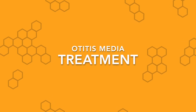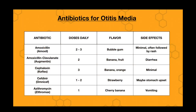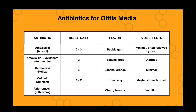In treating otitis media, we use oral antibiotics. The most commonly used is amoxicillin — given two or three times a day, bubble gum flavor, with usually minimal side effects. Sometimes when the ear infection goes away, you may see a rash on the torso. That does not usually mean you have an allergy to amoxicillin — very often it's a sign that things are getting better. But if you have concerns about that rash, definitely talk to your doctor.